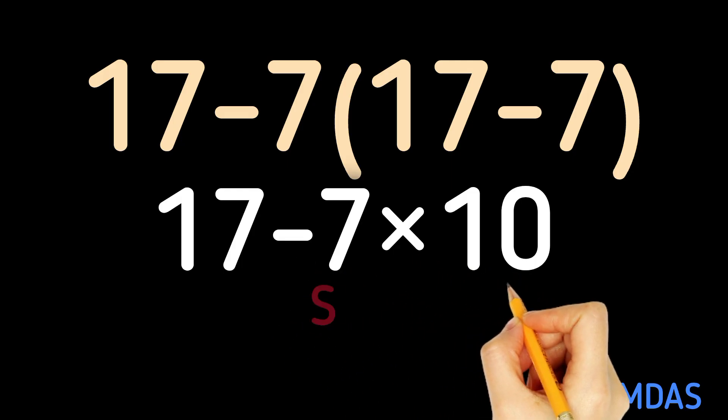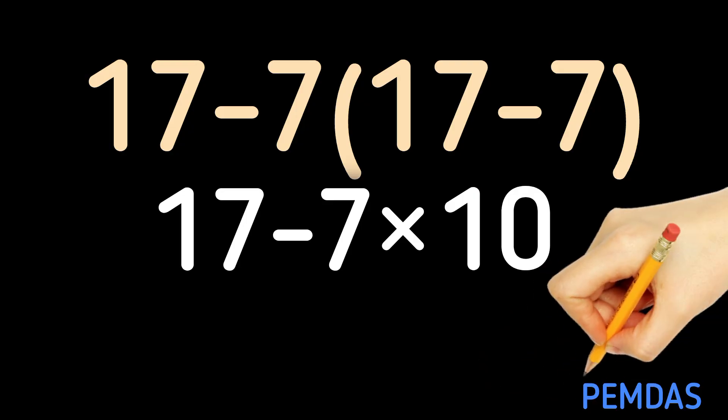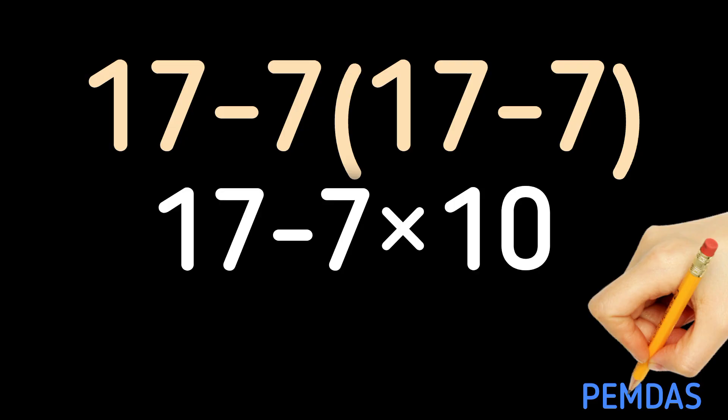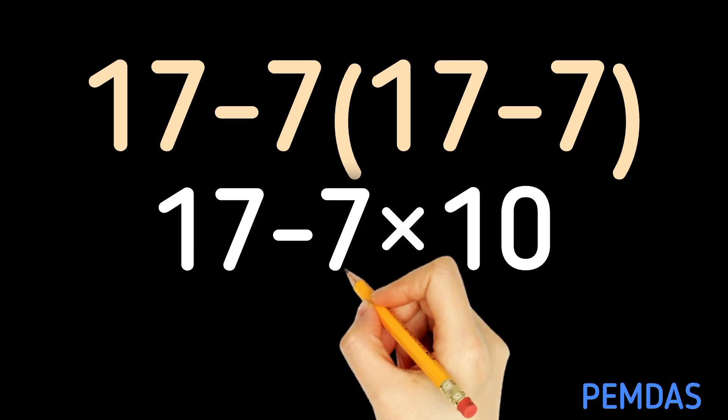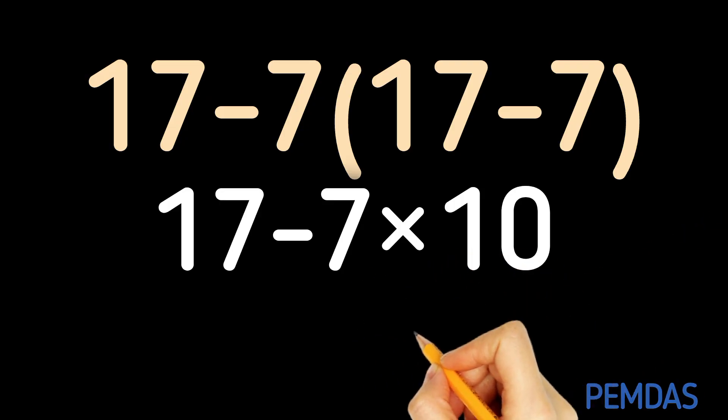Step 2. According to PEMDAS, we handle multiplication before subtraction. So 7 times 10 equals 70.